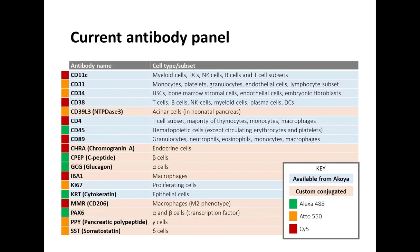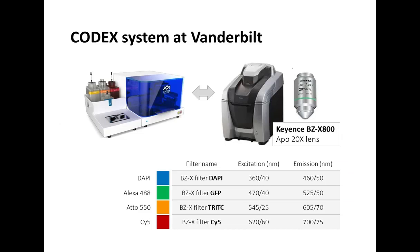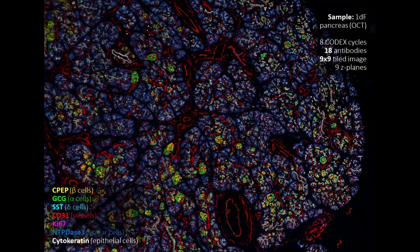Here is a list of the markers we've been using in our tissue samples. The pre-conjugated and validated antibodies from Akoya are highlighted in blue, and then we also have antigens prepared as custom conjugated antibodies. They represent a mix of different cell types with a range of corresponding reporters so we can efficiently use multiple fluorophores in each cycle during our Codex run. Our system at Vanderbilt is integrated with the Keyence scope, the BZ-X800, using an APO 20X lens. The filter cubes we are using are the DAPI, GFP, TRITC (recognizing the Cy5 wavelength), and Cy5.